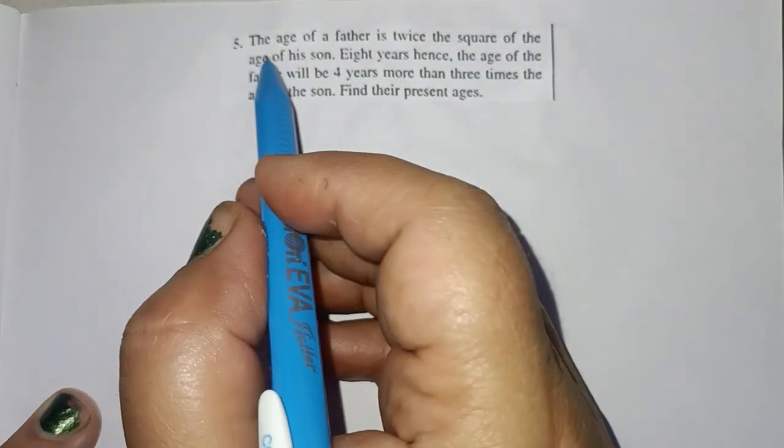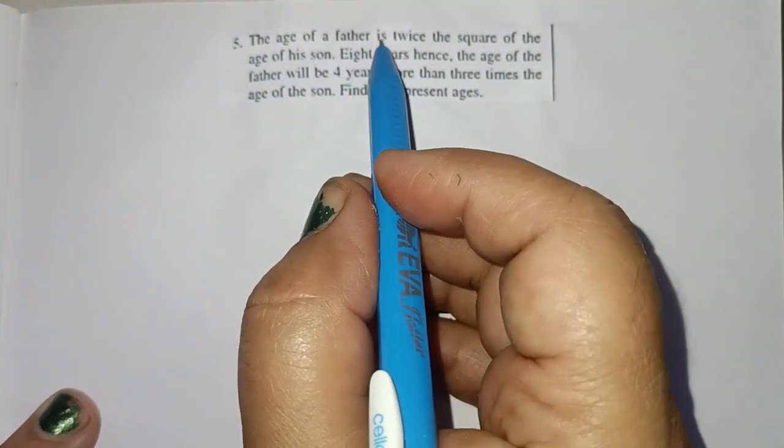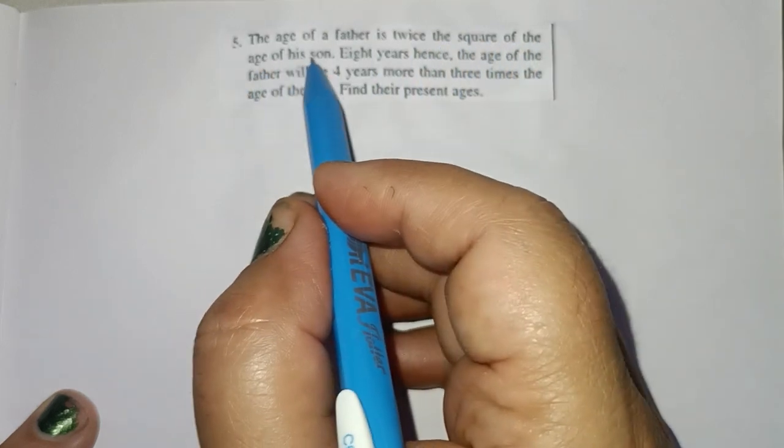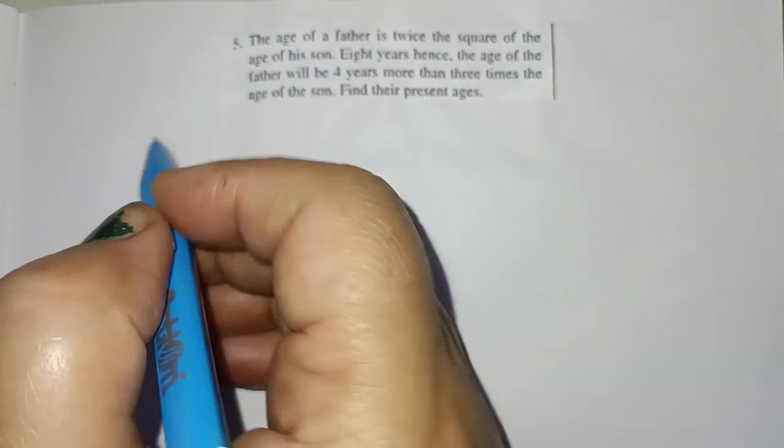Question No. 5. The age of a father is twice the square of the age of his son. Solution.